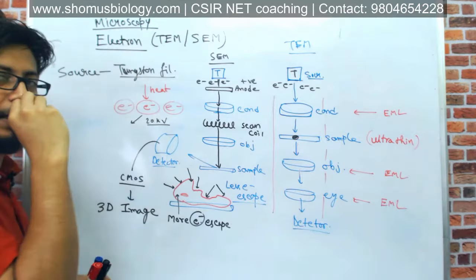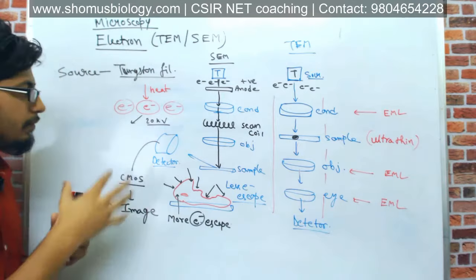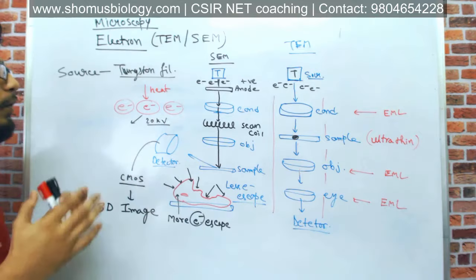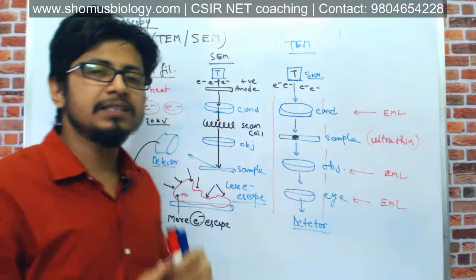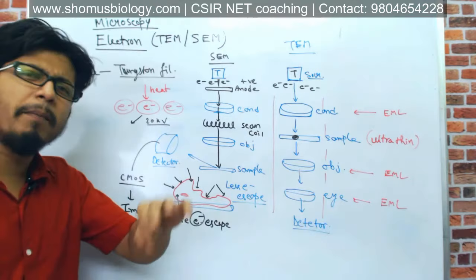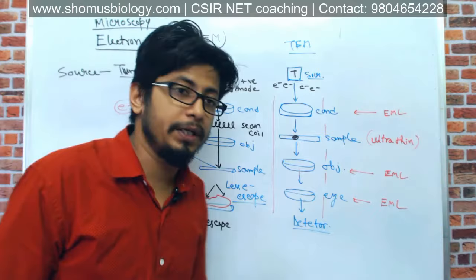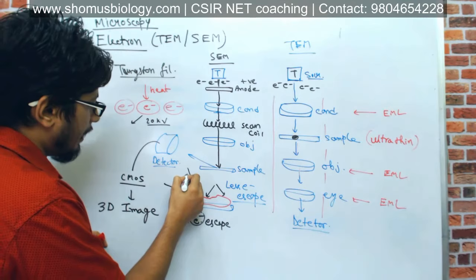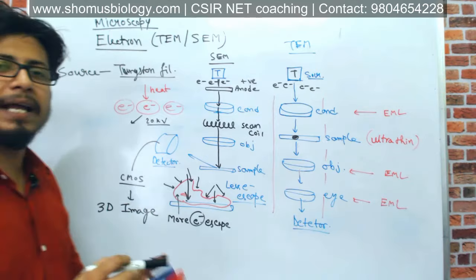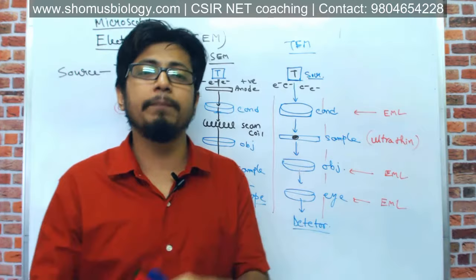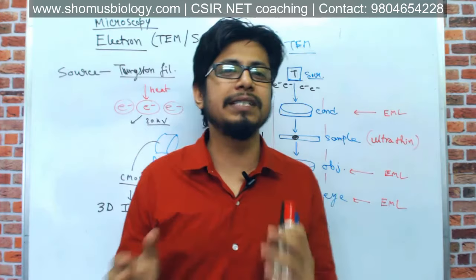In both types of electron microscopy, a similar tungsten filament is used to generate electrons through heating, and about 20,000 volts of energy is applied to focus the electron beam. In SEM, an anode is used to arrange electrons into a beam, which passes through the scanning coil and ultimately reaches the sample specimen. The electron beam can penetrate the sample at different micron-level depths, reaching different portions of the sample body to capture images and give us a better three-dimensional picture.